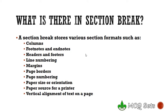Now, what's stored in a section break? Well, these are the section formattings, like columns — newspaper style columns — and footnotes, endnotes, and where you want to place them. Similarly, headers and footers, line numbering, margins, page borders, page numbering, paper size or orientation — whether portrait or landscape — a paper source for a printer, and vertical alignment of text. These formats are the section formattings.